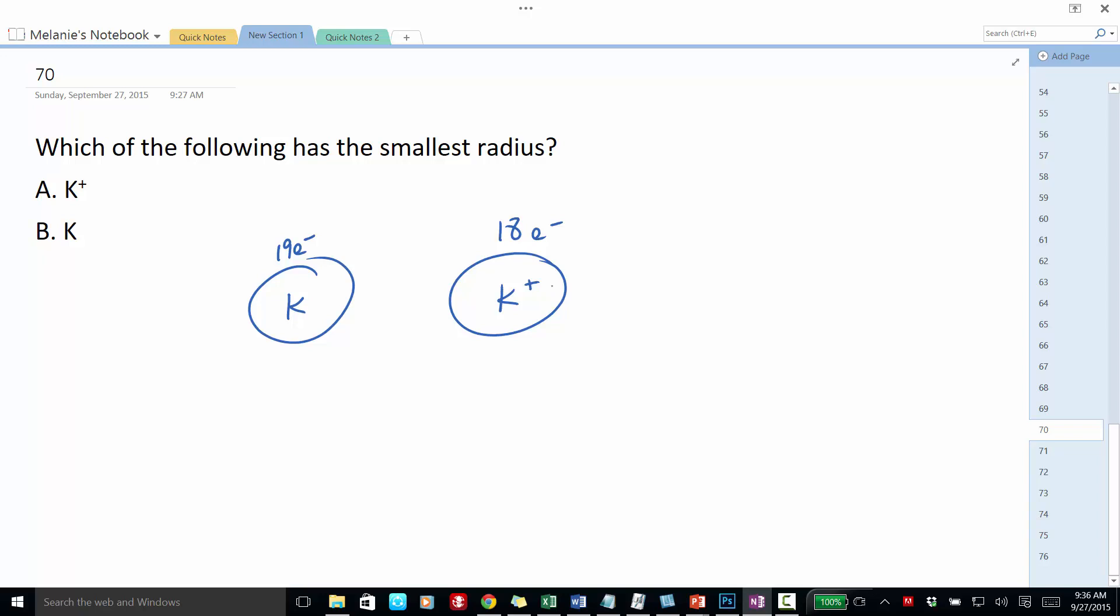Well, the one with fewer electrons, because the electrons have repulsion among each other. To begin with, just losing an electron means a smaller radius, but also losing that repulsive force between an extra electron should shrink the ion a little bit more than the atom. So the potassium ion has the smallest radius.